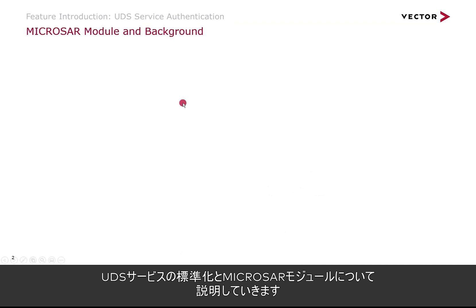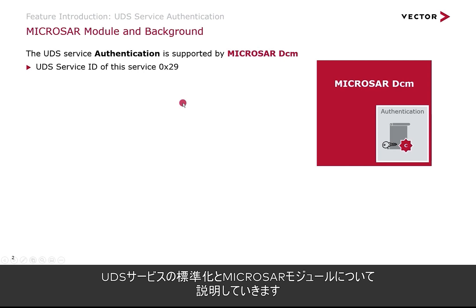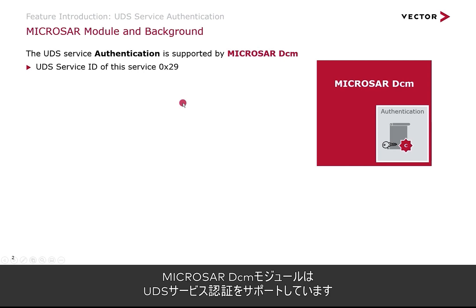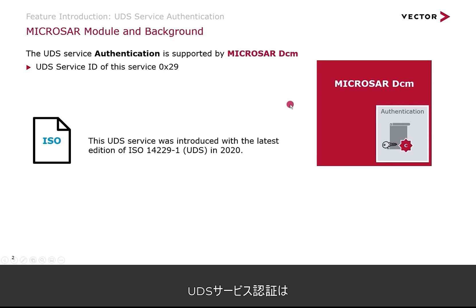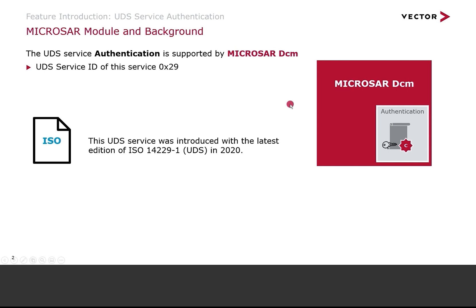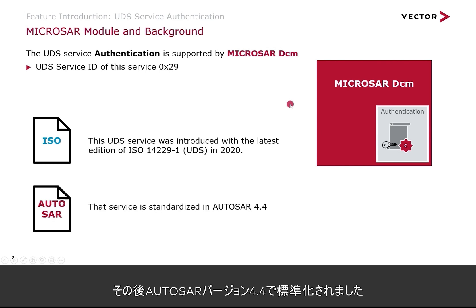A little bit of background on which Microsoft module is affected and about the standardization of the UDS Service. The UDS Service Authentication is supported by the MicroSAR DCM module. From a UDS Service point of view, the service ID is 29 for this service. The UDS Service Authentication was introduced with the latest edition of ISO 14229-1 UDS in 2020, and consecutively it was standardized in AutoSAR in version 4.4.